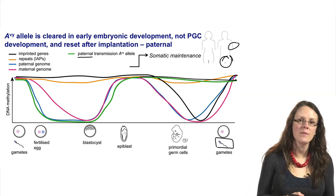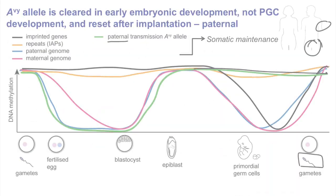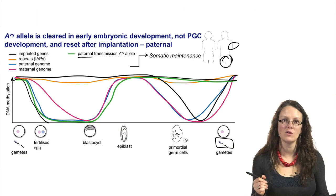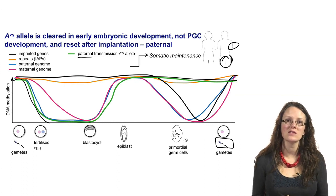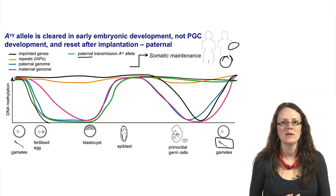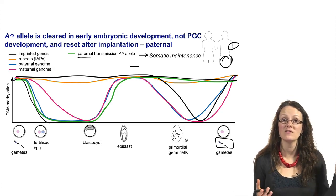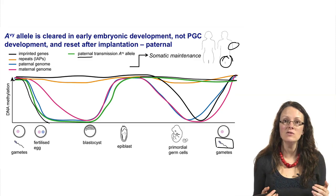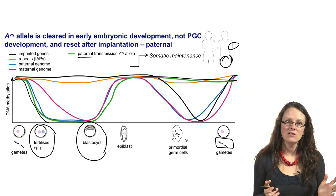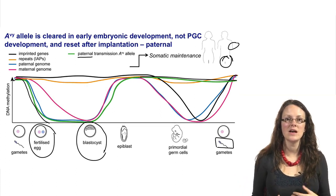The next experiments looked at what happens during pre-implantation development. Following the data, just like the rest of the paternal genome, the agouti viable yellow allele when passed through paternal transmission — coming in via the sperm — is actively demethylated, just like the rest of the paternal genome. By six hours post-fertilization, essentially all of the DNA methylation at this allele, whether from a pseudo-agouti male with heavy methylation or a yellow male with very little, is essentially completely cleared. Blastocysts derived from either of these males also have very little methylation. This clearing has happened not in primordial germ cell development but in early embryonic development.